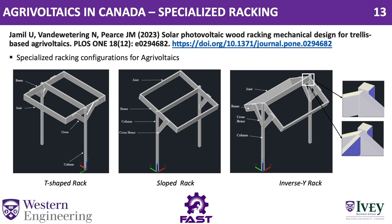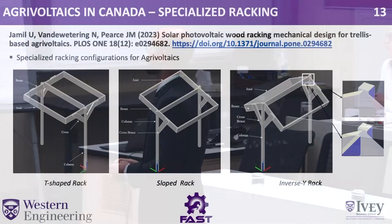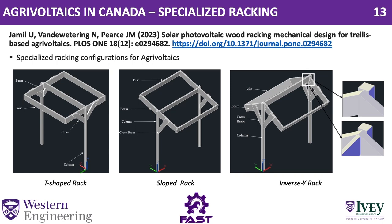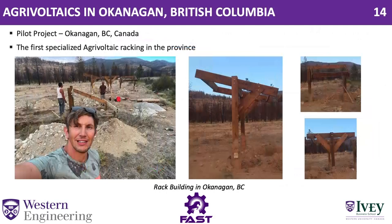In the next few slides, I'll cover some of the research work that Dr. Pierce and I have been doing on Agrivoltaics. We published a paper focused on specialized racking designs for Agrivoltaics. Since we need to farm and crop underneath the panels, the panels should be at a certain height — these racking designs are almost 2 meters high so farmers can work underneath them. The best part is that they are made of wood, which is sustainable and cheap — almost 50% less costly compared to commercial designs. The same project was done in British Columbia. As far as I know, these are the first specialized Agrivoltaic racking designs built in Okanagan, BC.